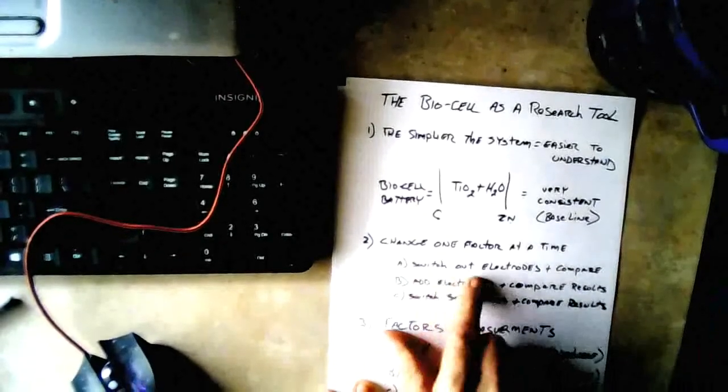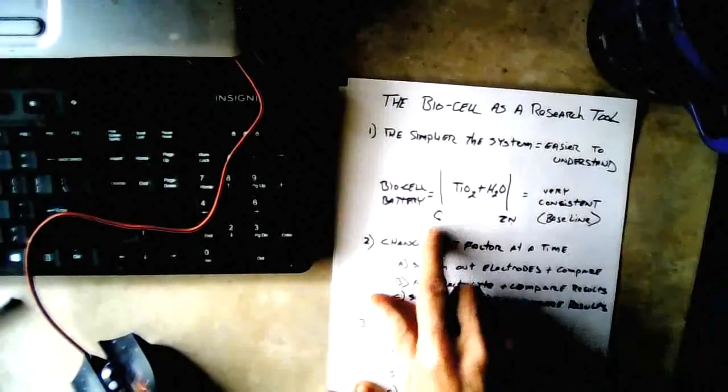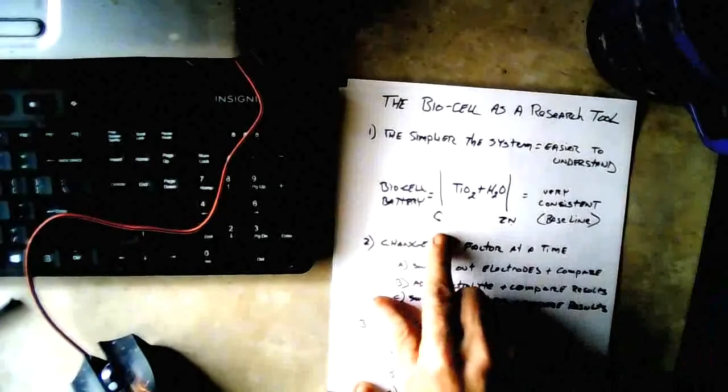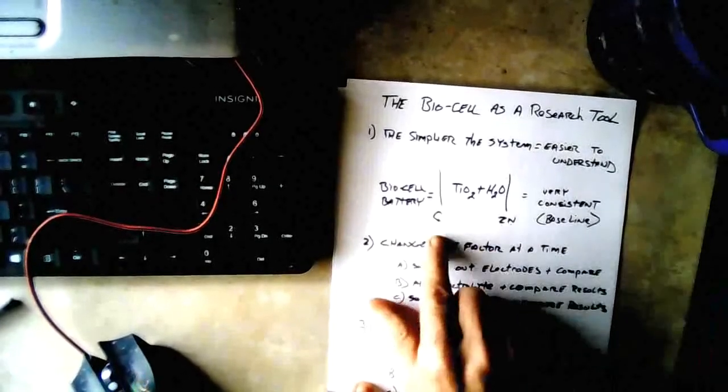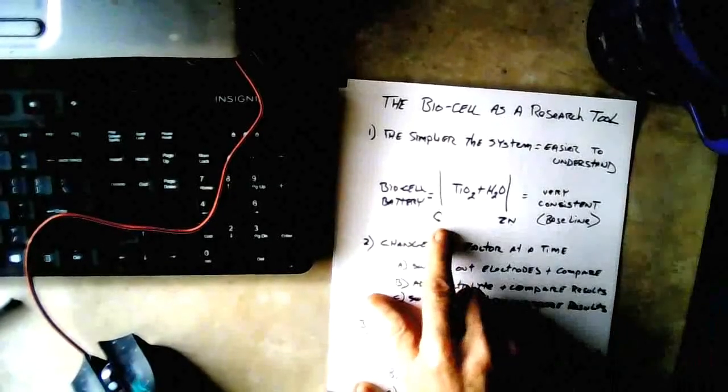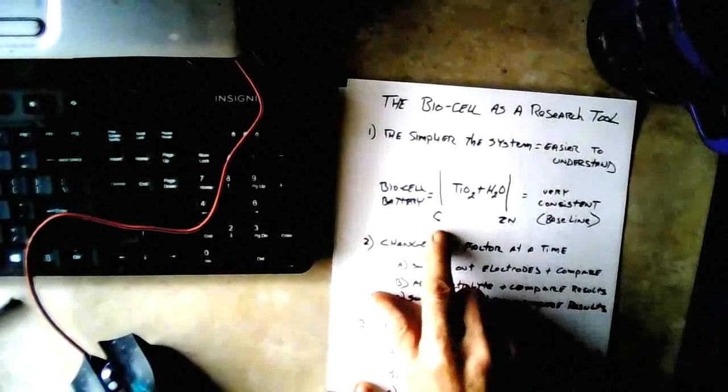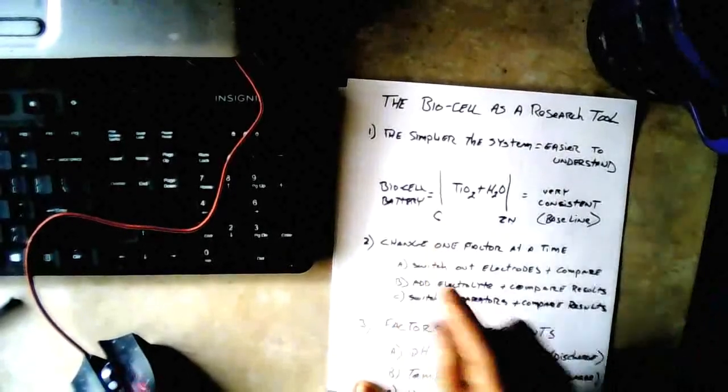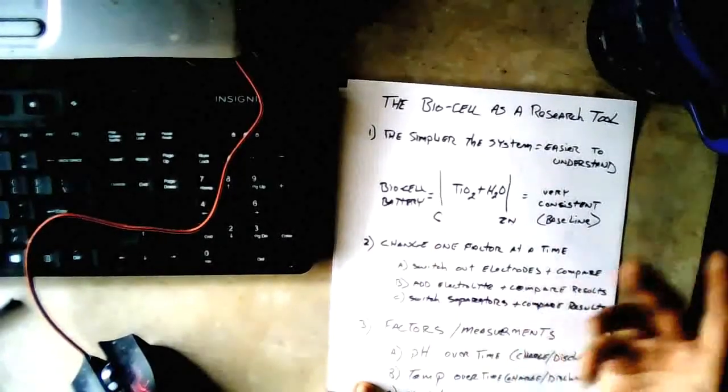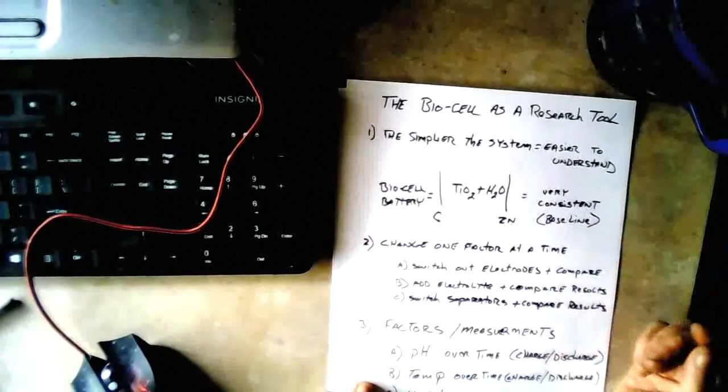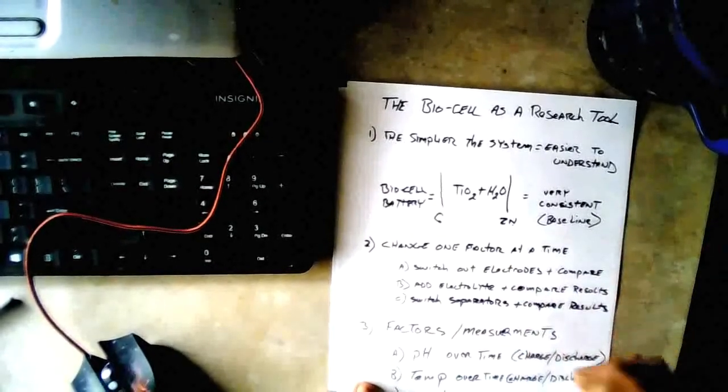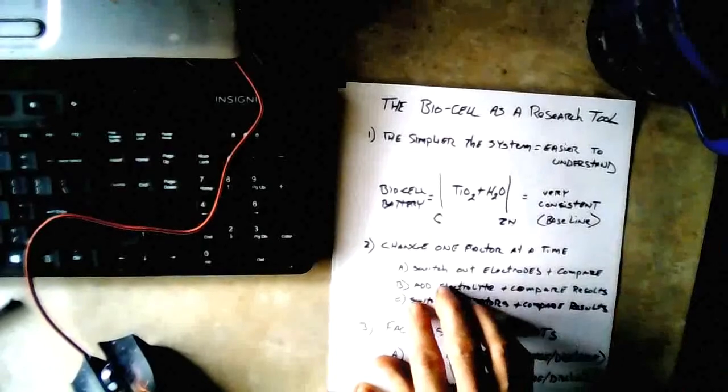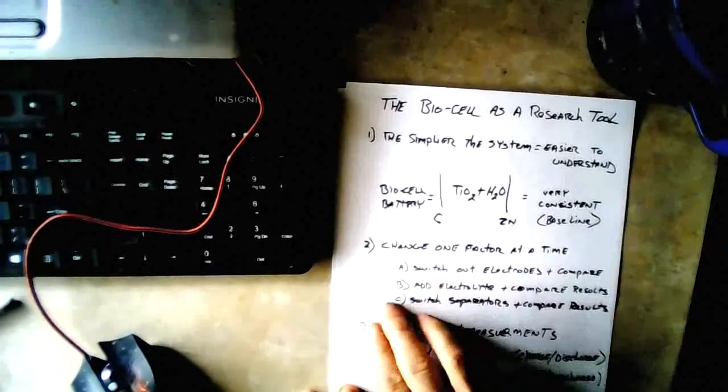Let's say you're working on electrodes, and you're developing a carbon electrode to use with your batteries. Well, you just switch out to your carbon for your baseline carbon, which is graphite in my case. And then you can measure your cell, and you'll know instantly whether your electrode is better than graphite or worse than graphite.